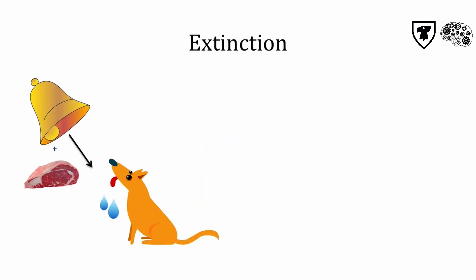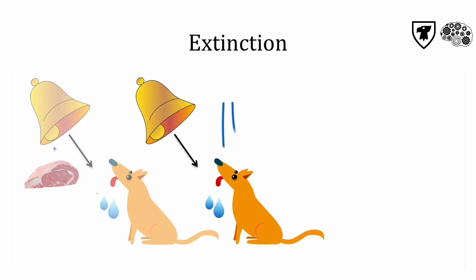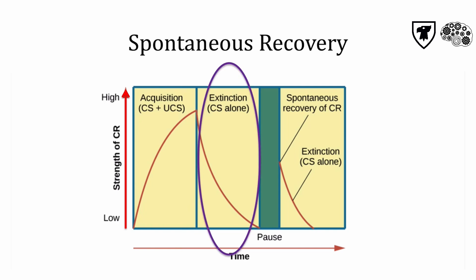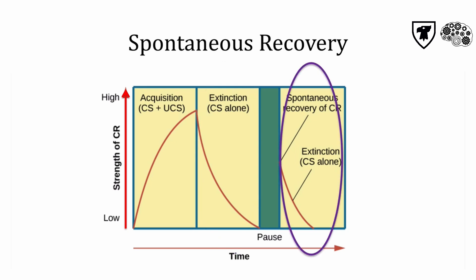Extinction is the disappearance of a conditioned response when the CS and US are no longer paired. This happens when the CS appears repeatedly on its own without the meaningful US, and the CR eventually stops happening. This figure shows the strength of the CR on the y-axis during training and during extinction. However, Pavlov showed that if the CS alone is presented after a delay, the CR will spontaneously recover, although the response is usually weaker. Therefore, extinction likely suppresses learning but does not erase it.